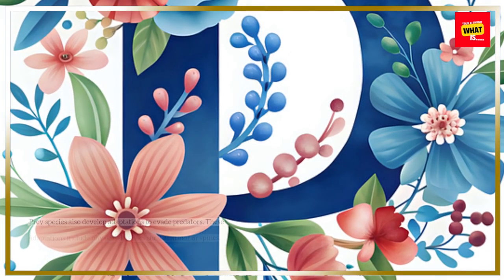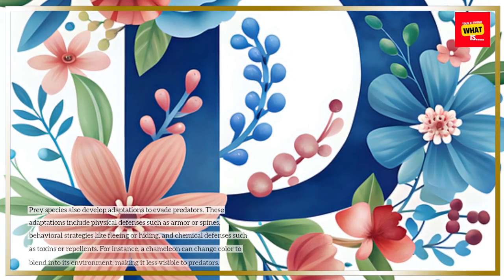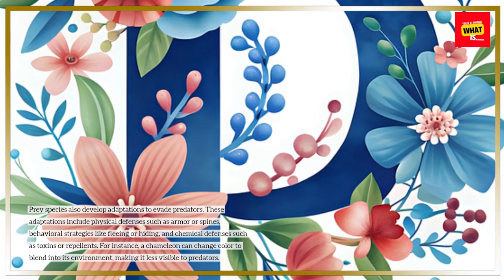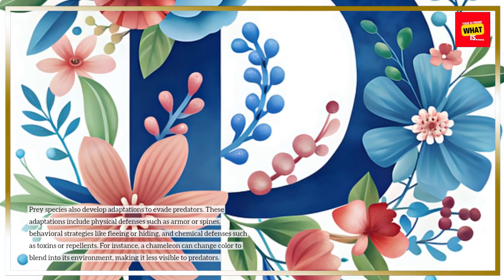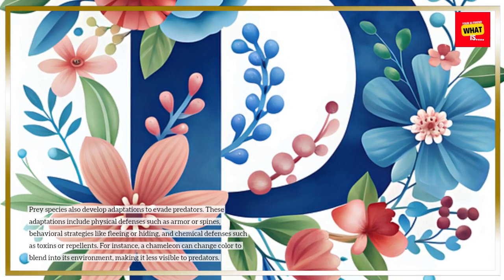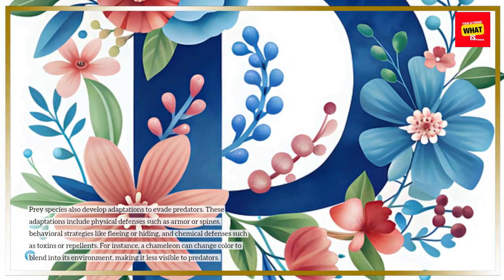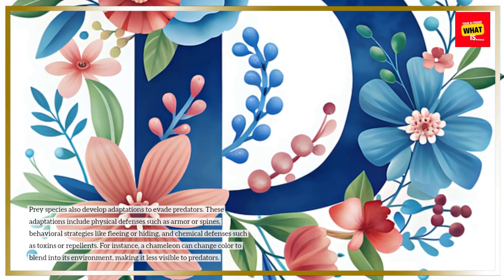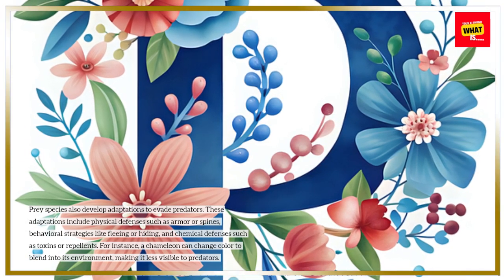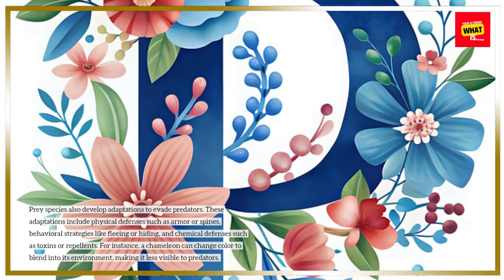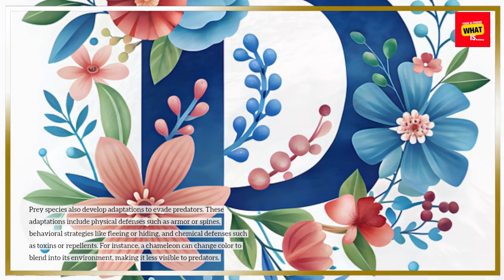Prey species also develop adaptations to evade predators. These adaptations include physical defenses such as armor or spines, behavioral strategies like fleeing or hiding, and chemical defenses such as toxins or repellents. For instance, a chameleon can change color to blend into its environment, making it less visible to predators.